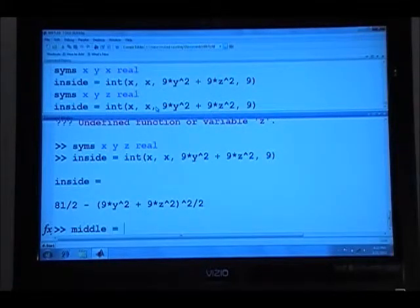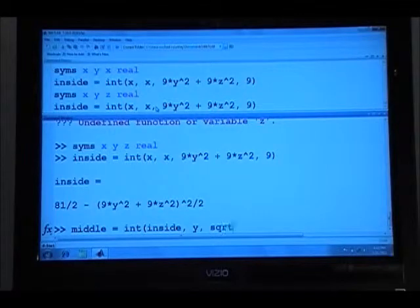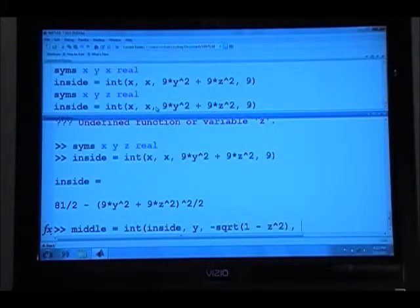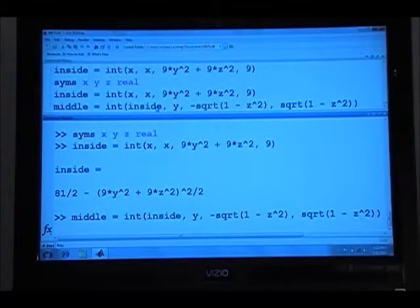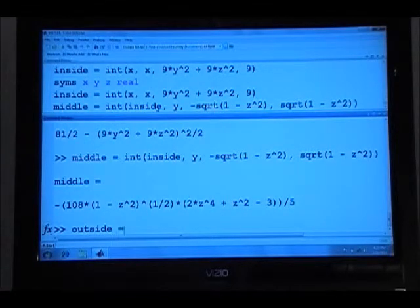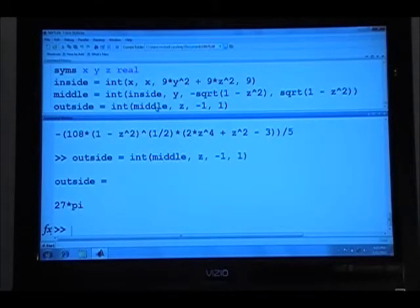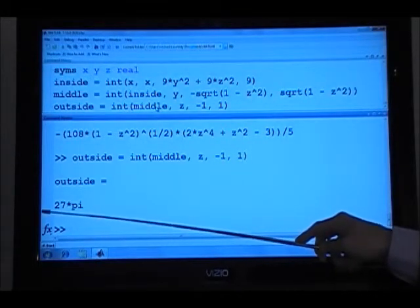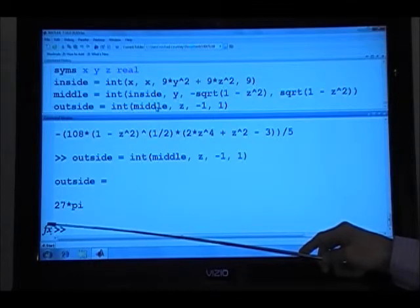And then the middle integral is equal to the integral of the inside integral over the variable y, and the lower limit in y is negative square root of 1 minus z squared, and the upper limit in y is the square root of 1 minus z squared. And now the outside integral is equal to the integral of the middle integral over the variable z from negative 1 to 1. And 27 pi works out to be the final answer for the integral in question.